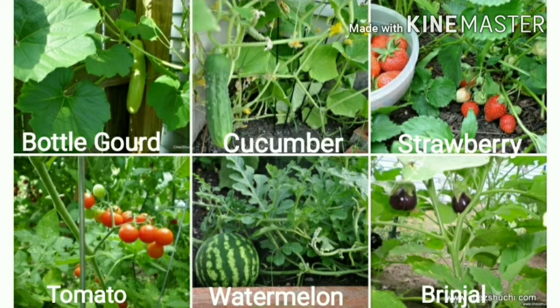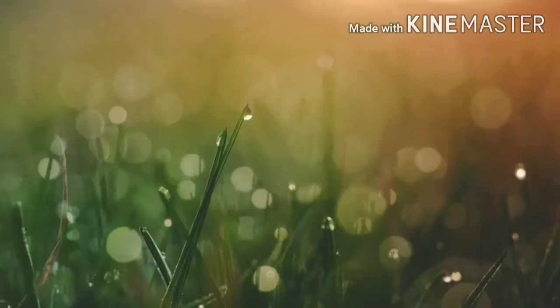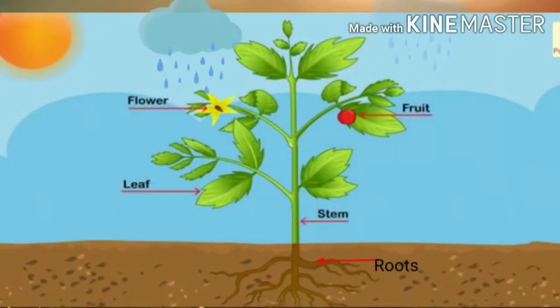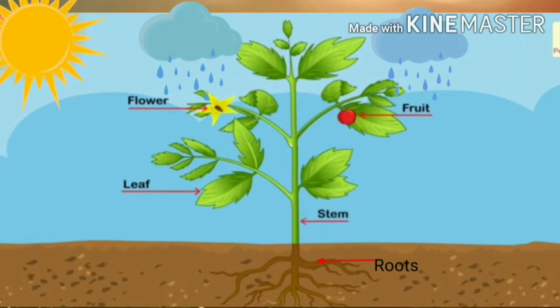I hope you all have understood the types of plants. Now, do you know what a plant needs? A plant needs air, water, and sunlight to grow. These are very important for plants, as they help plants make their own food. Here are the parts of a plant: flower, fruit, leaf, stem, and roots.